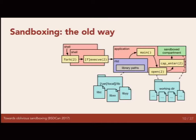This is how sandboxing works as it stands right now with Capsicum. If you have a shell and you want to execute an application in a sandbox, you fork and then exec or fexecve. The runtime linker runs first — the kernel maps a runtime linker into memory along with the application and says, 'Dear runtime linker, here's the application. Go.' The runtime linker finds libraries, then main runs, the application opens resources it needs, then it calls cap_enter. Now we are in a compartment with access to the resources previously opened.